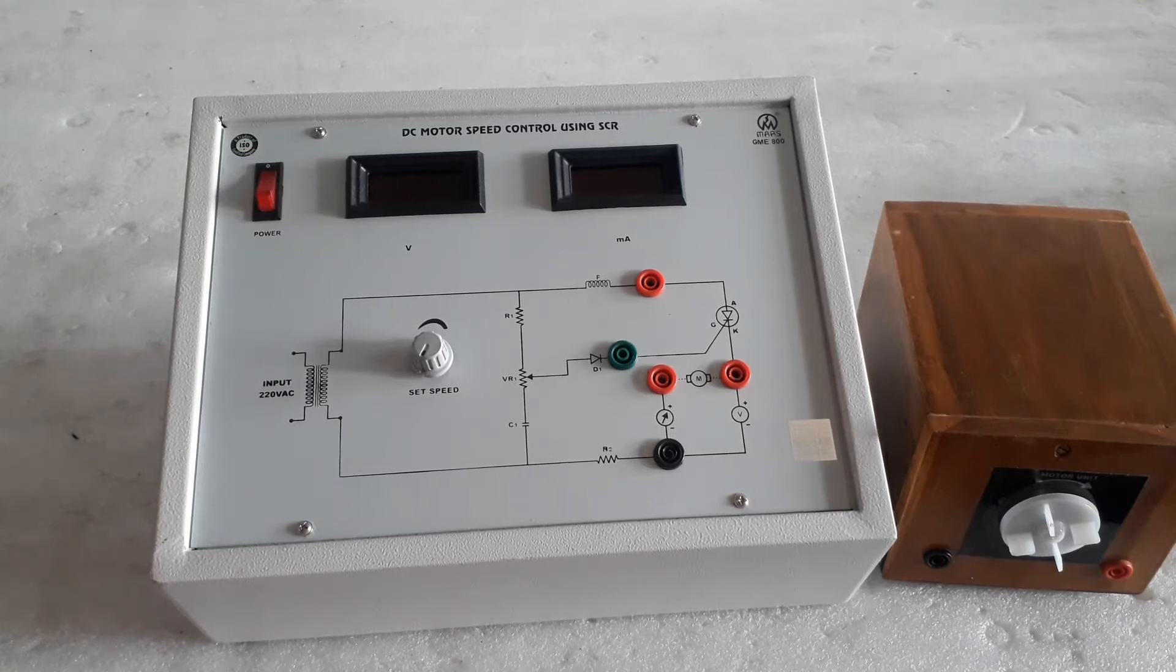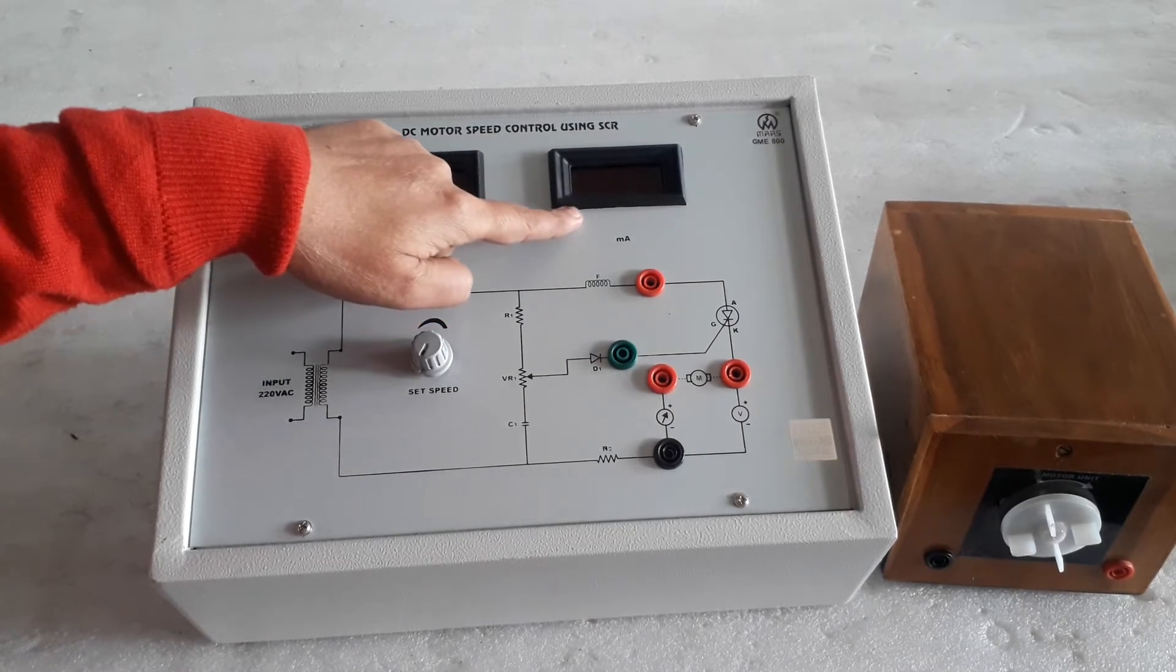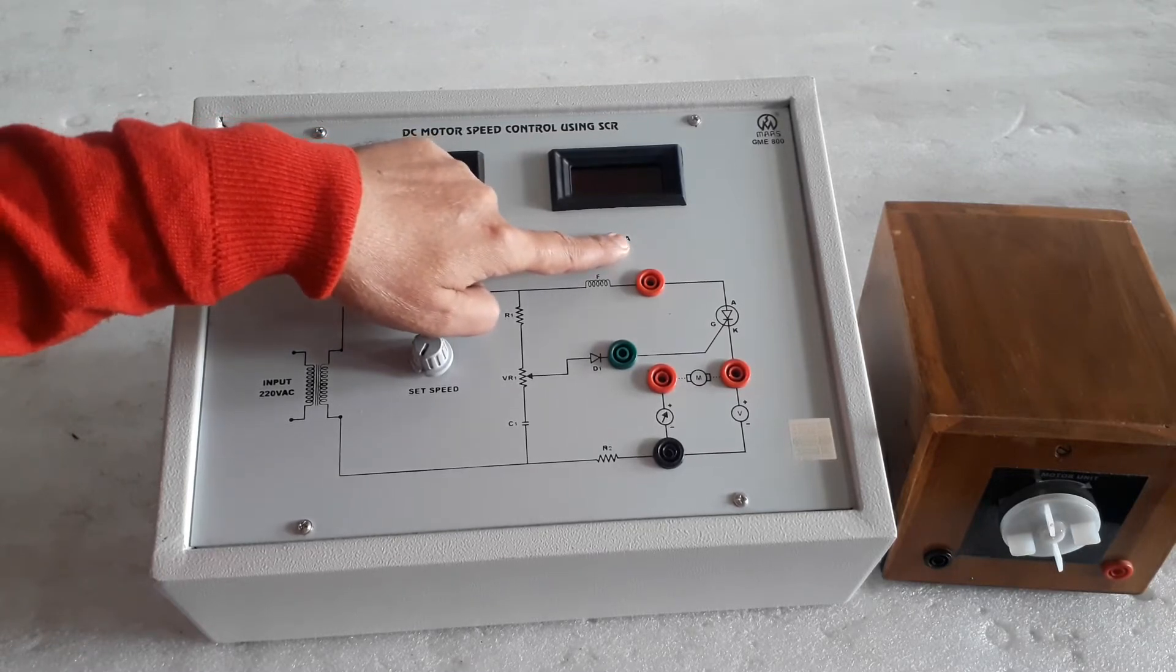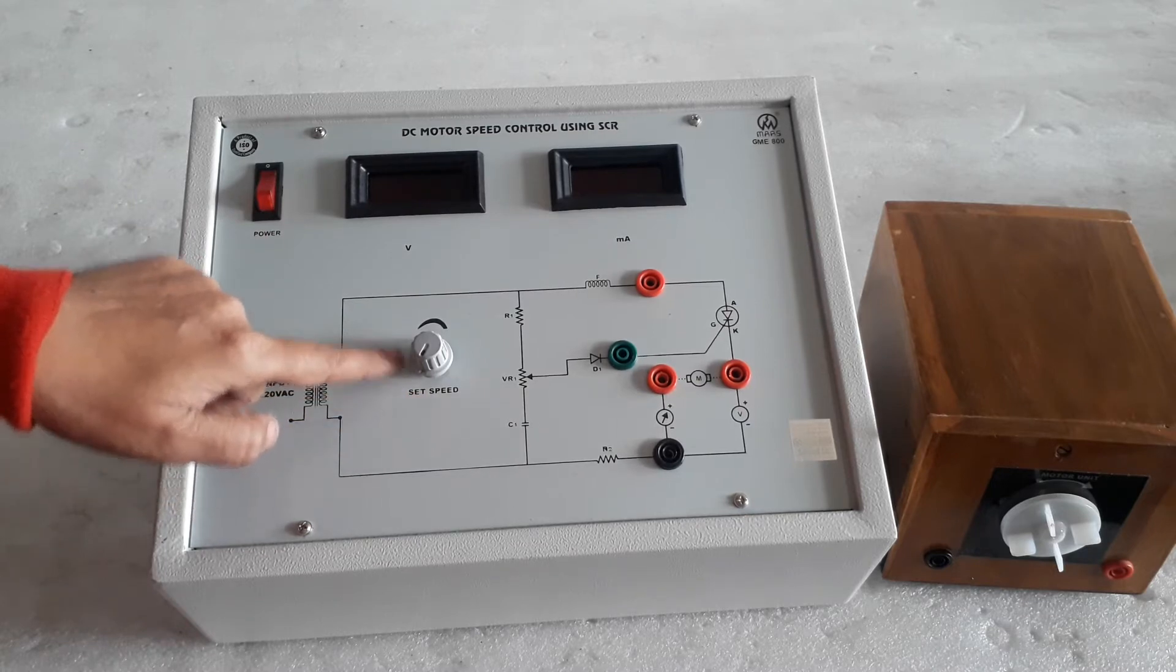This is the Marchmake DC motor speed control using SCR. Here is a digital voltmeter and digital milliamp meter. Here is a control meter for speed control.